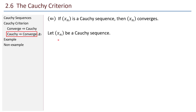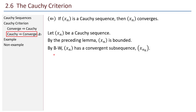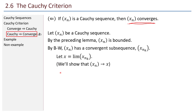Let x sub n be a Cauchy sequence. By the preceding lemma, this sequence is bounded. Now I can use the Bolzano-Weierstrass theorem: since it's bounded, it has a convergent subsequence x sub n sub k. Let x be the limit of that subsequence. My goal is to show the original sequence converges. Let epsilon greater than zero be given.